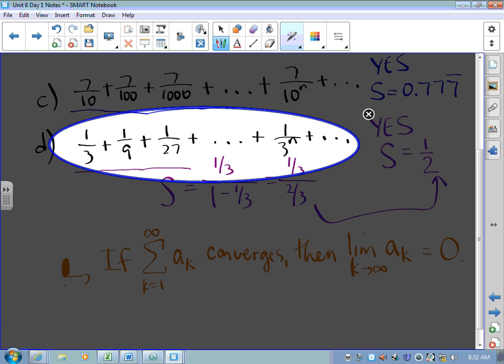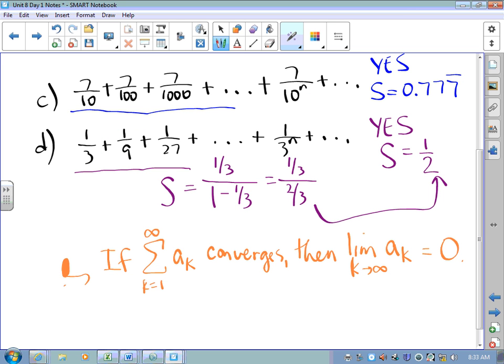And so, we should not be surprised that 7 over 10 to the n gets closer and closer to 0 as n gets large.